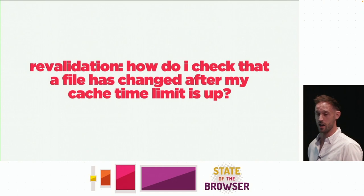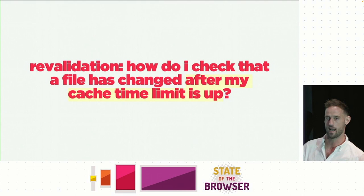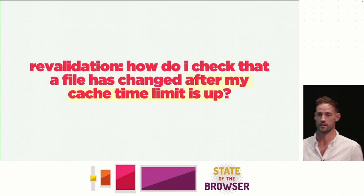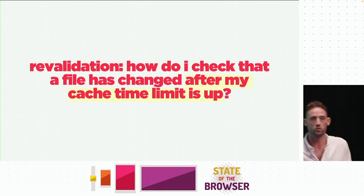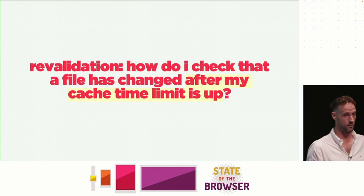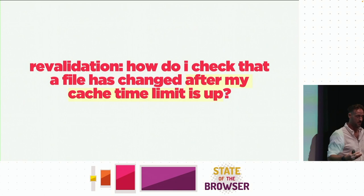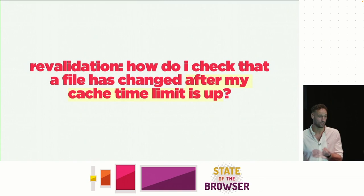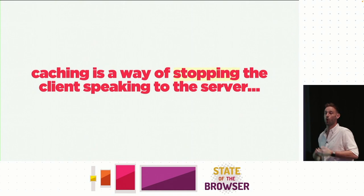The key bit is 'without checking for updates' — we use this file over and over regardless of whether it has changed on the server. Revalidation is: how do I check that a file has changed after that cache time limit is up? One of the most common misunderstandings is that developers somehow believe they can cache a file but it will also always be up to date. That's simply not possible. If you've told a browser to store a file for a week and you change it after one hour, that's on you.